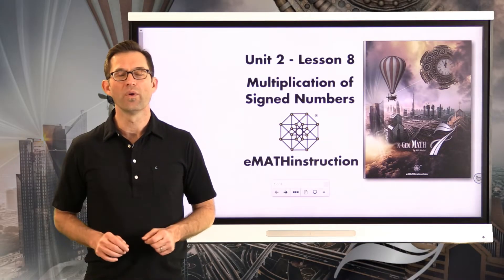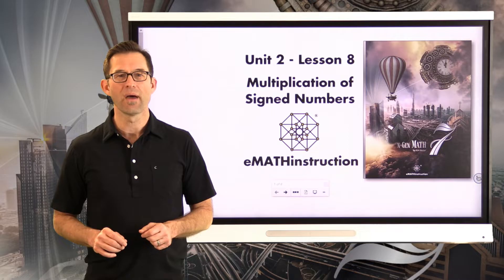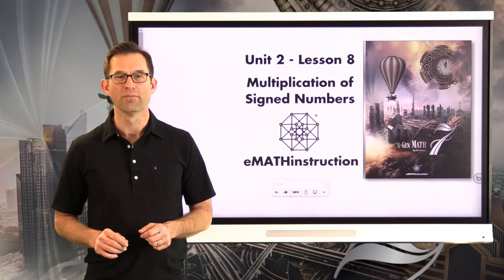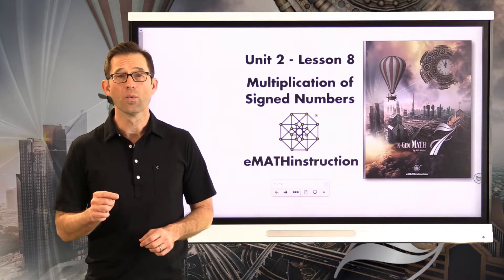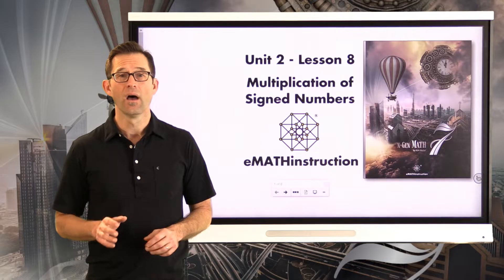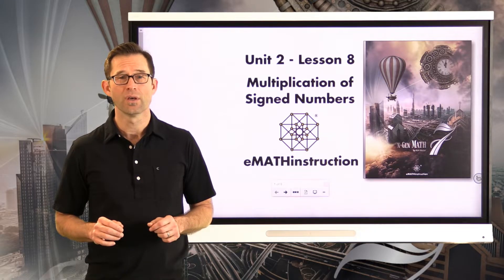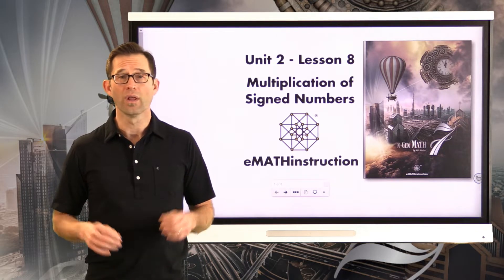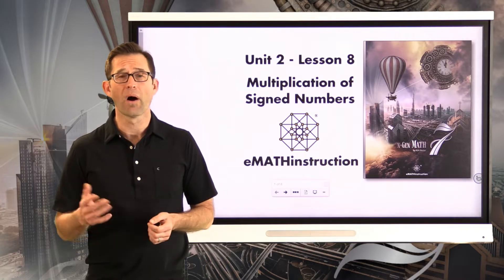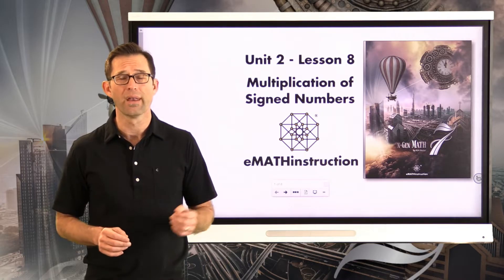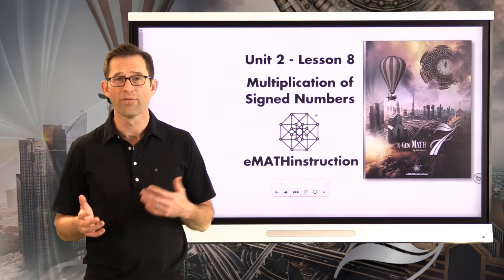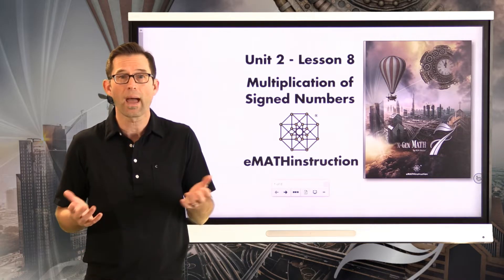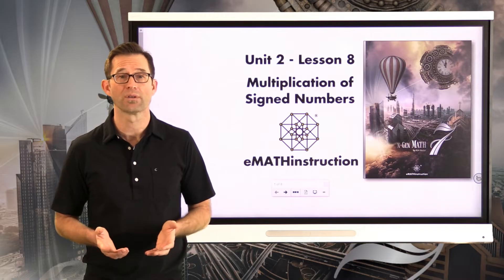Hello and welcome to another NGen Math 7 lesson by EMath Instruction. My name is Kirk Weiler and today we're going to be doing Unit 2, Lesson 8 on multiplication of signed numbers. We're going to look at what happens when we multiply a positive number by a negative number or vice versa, and what happens when we multiply two negative numbers.